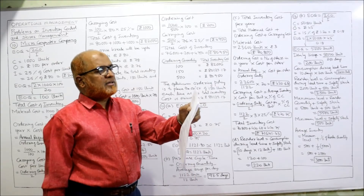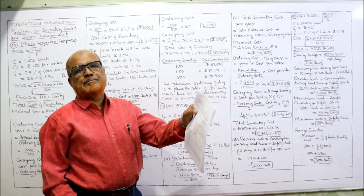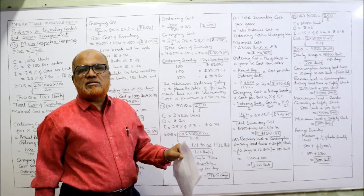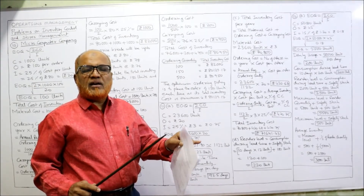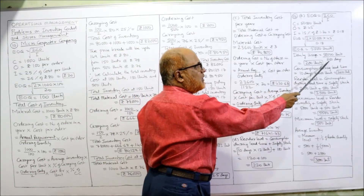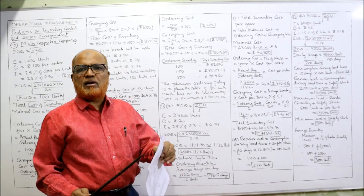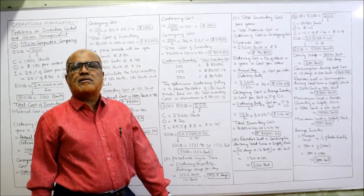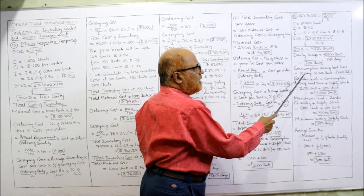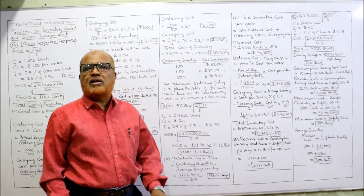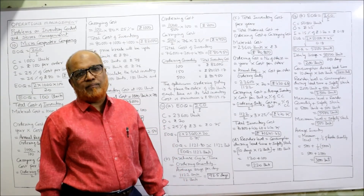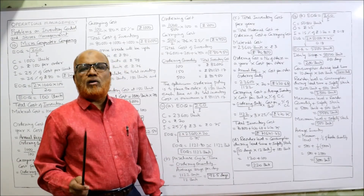If the company operates 250 days a year: daily usage = 50,000 ÷ 250 = 200 units. Procurement lead time is 10 days. Consumption during lead time = 10 × 200 = 2,000 units. Safety stock is given as 500 units. Reorder level = consumption during lead time + safety stock = 2,000 + 500 = 2,500 units.